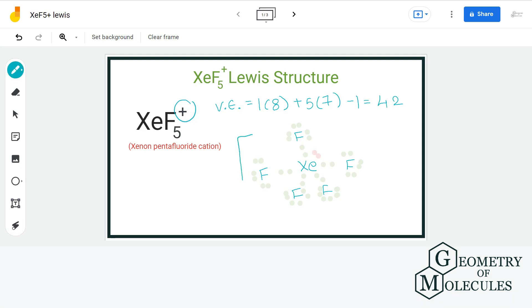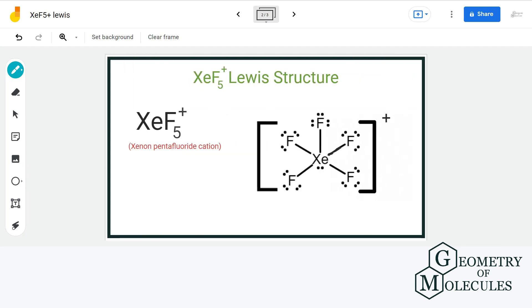Also, XeF5+ is an ion, so we will enclose it within a bracket. So this is the final Lewis structure of XeF5+ ion.